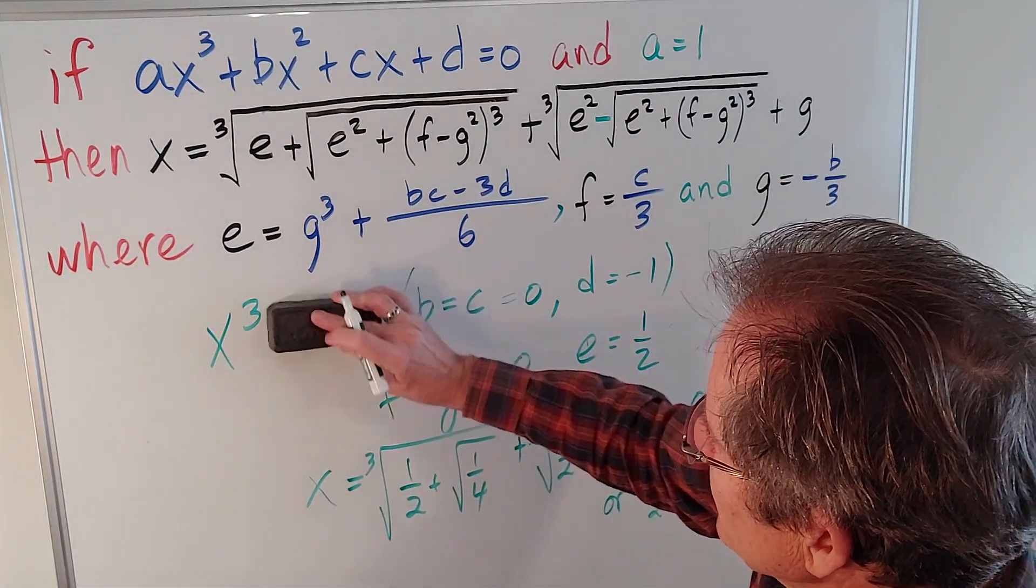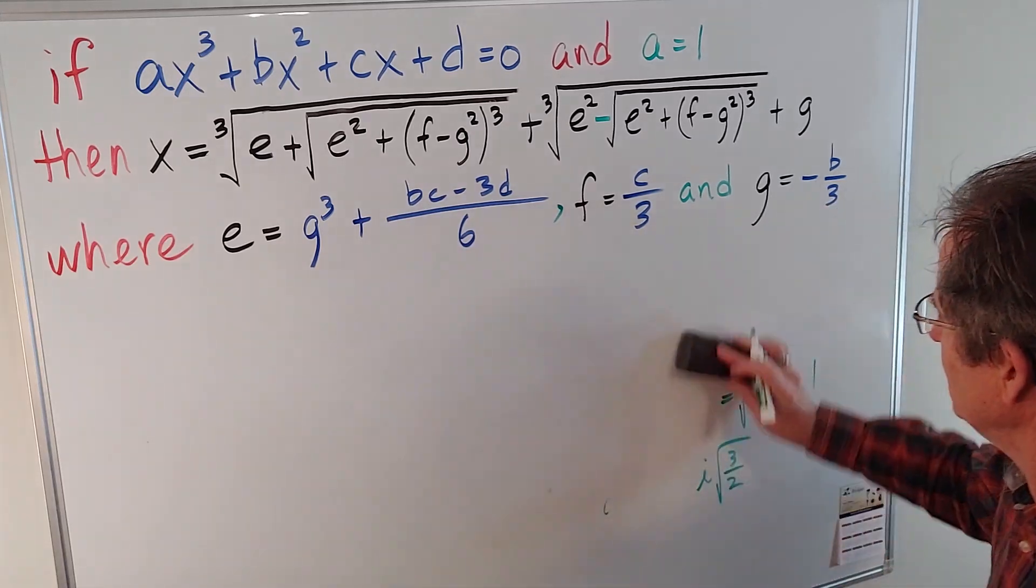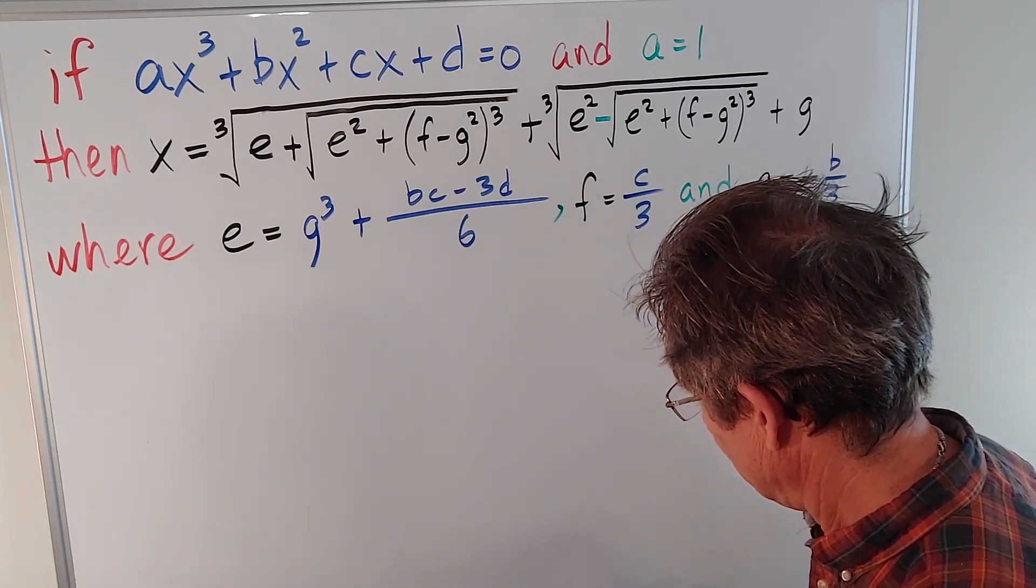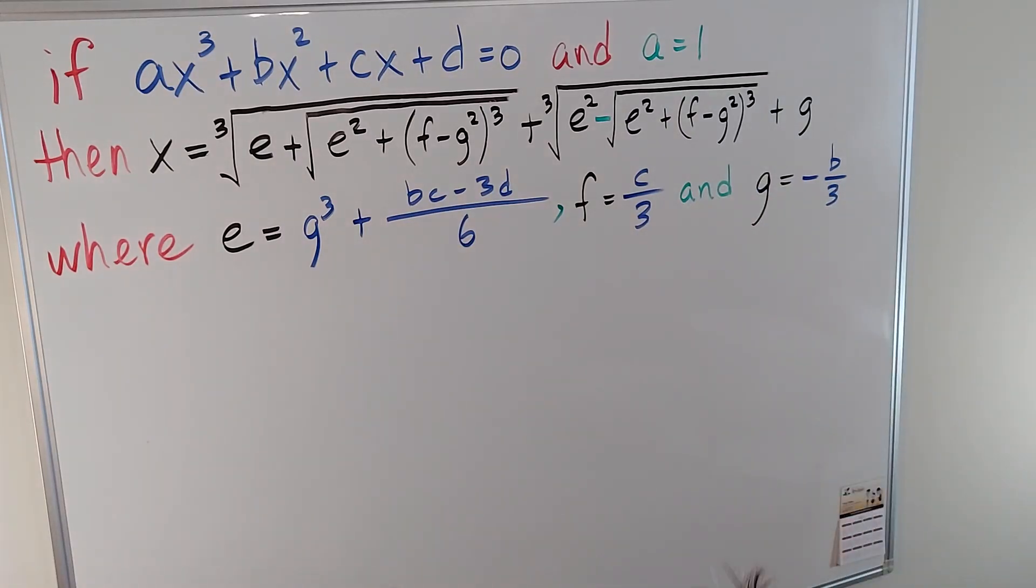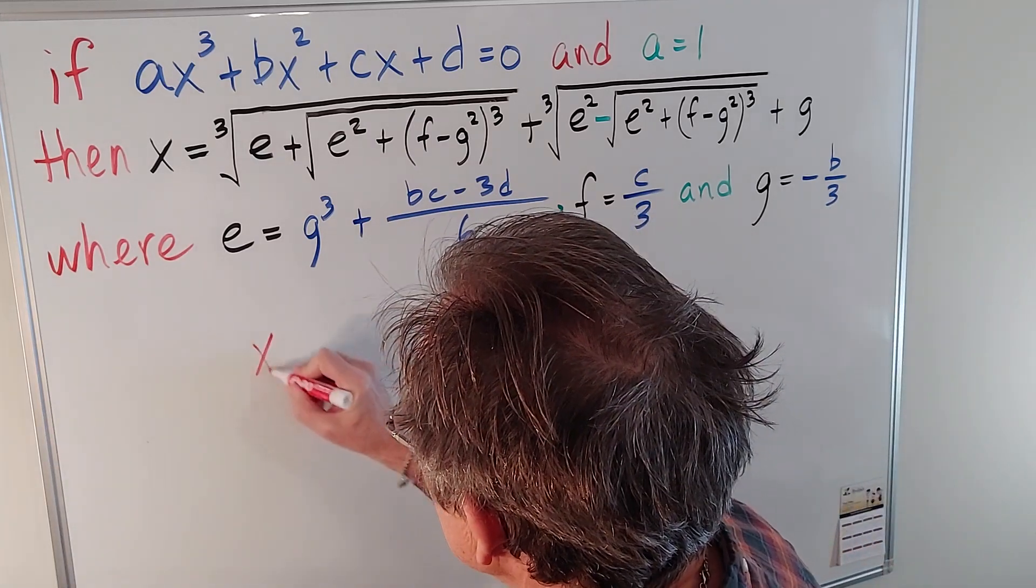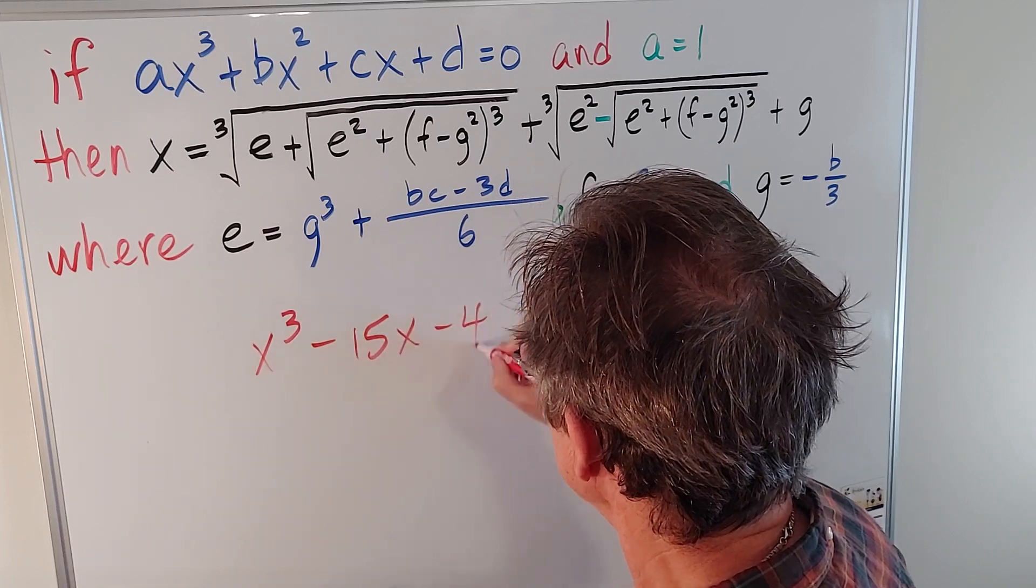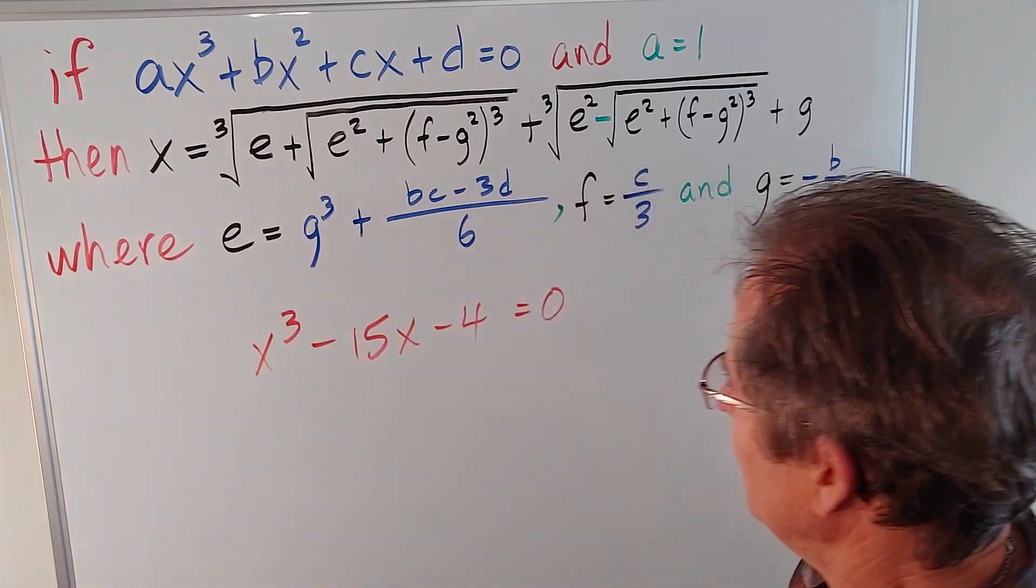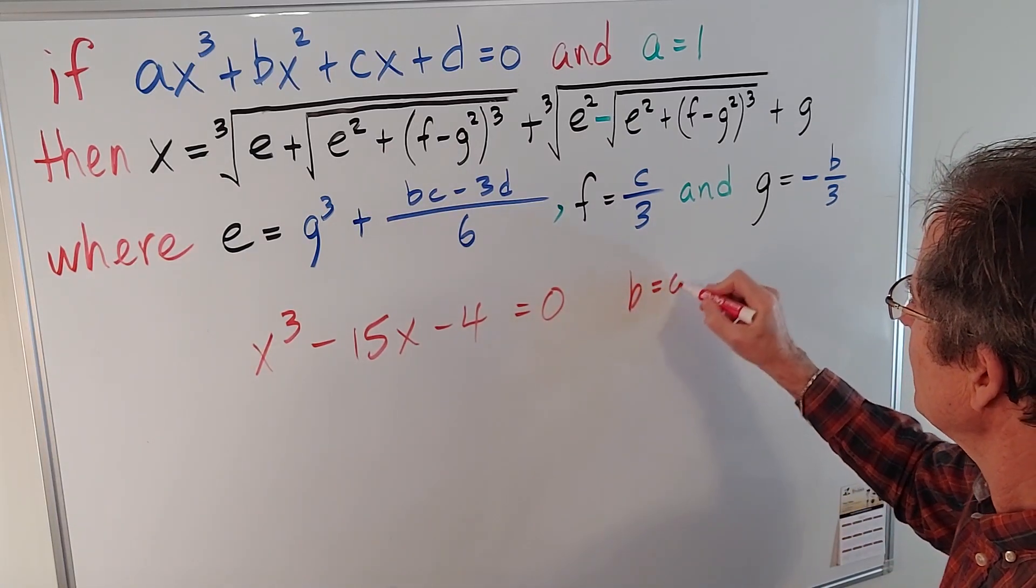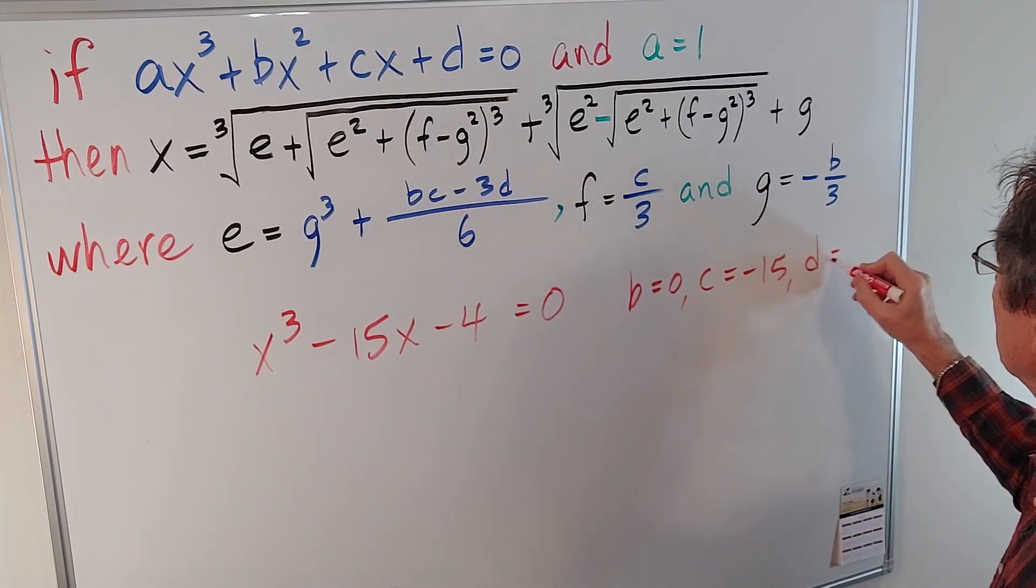Okay, let's look at something a little more complicated. Just look at my notes here for a second so I don't mess up. What if we have x cubed minus 15x minus 4? Well, b is equal to 0, c is negative 15, and d is negative 4.